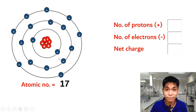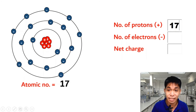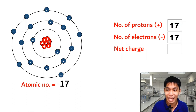Now consider an atom with an atomic number of 17. Assuming the atom is neutral, the number of protons is 17 and the number of electrons is also 17. Since they are the same, the net charge is 0.